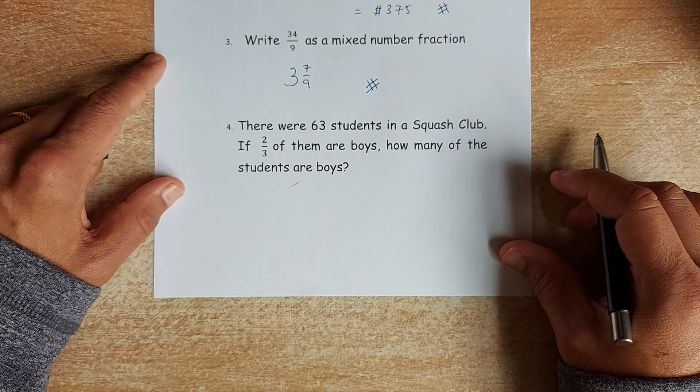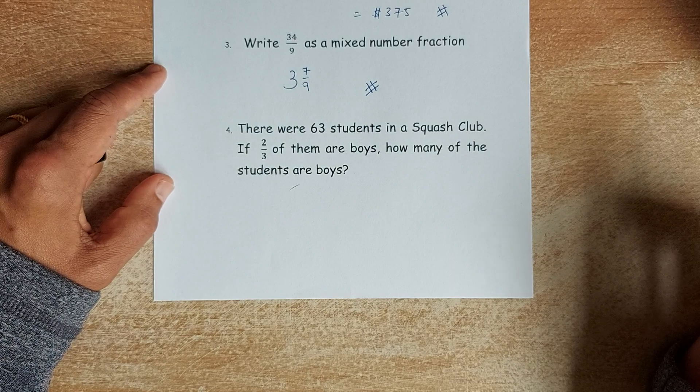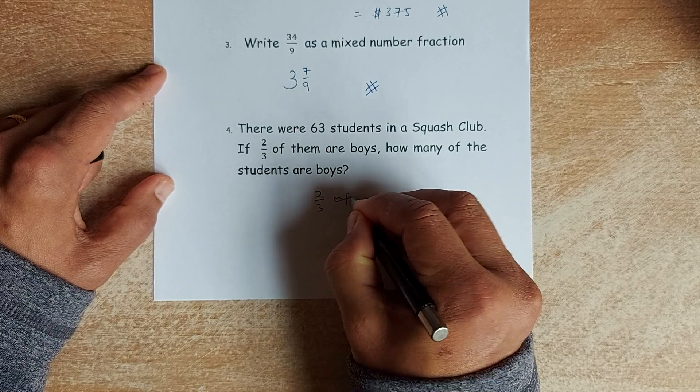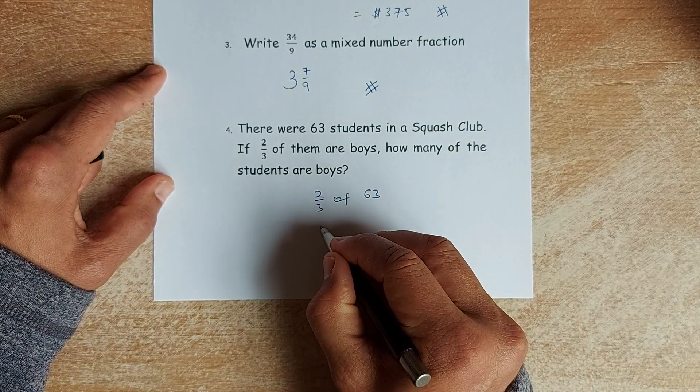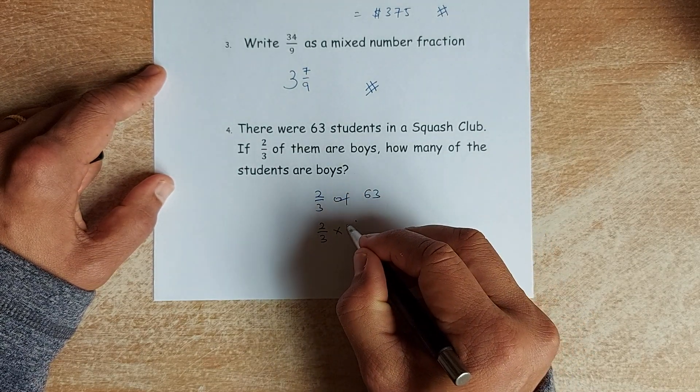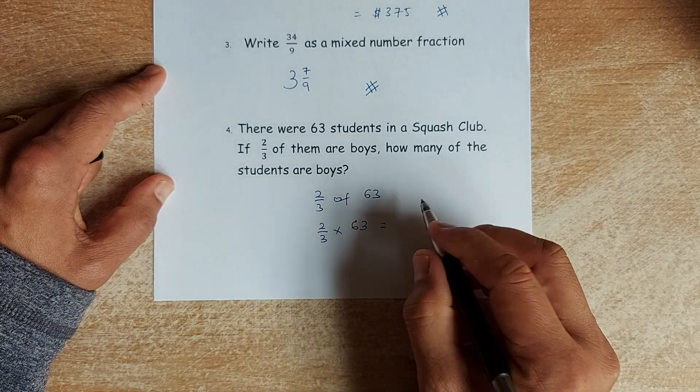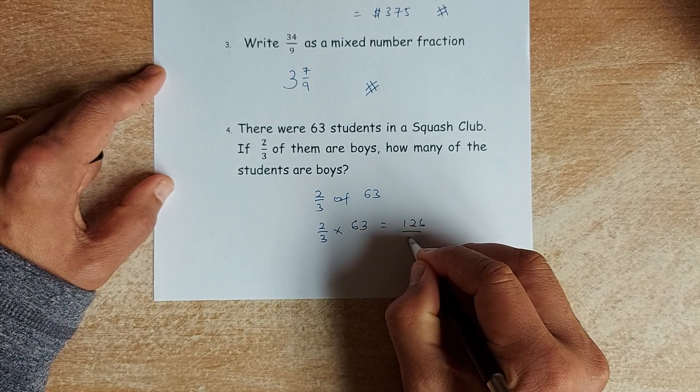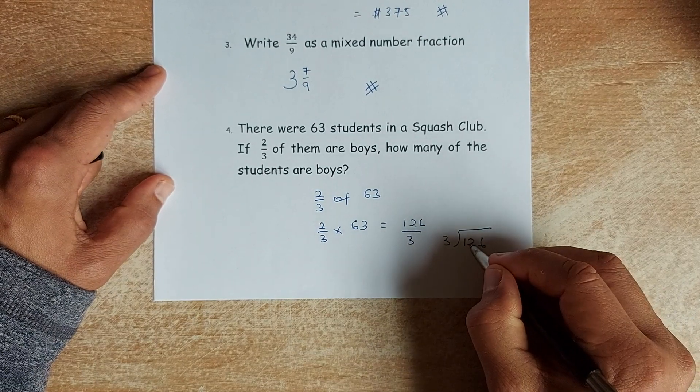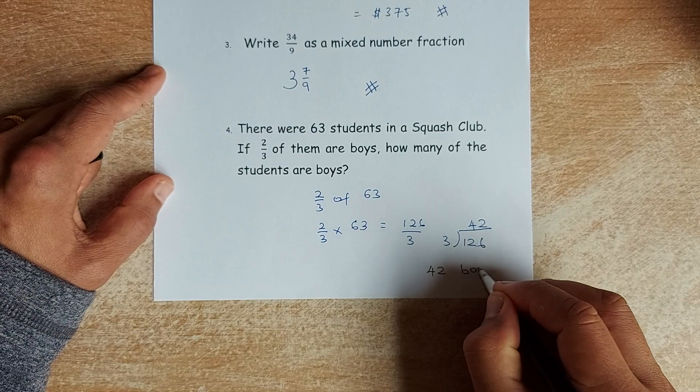Question 4 is, if there were 63 students at squash club, if two-thirds of them are boys, how many of them are boys? So two-thirds of 63 students are boys. So in other words, in mathematics, of means you multiply 2/3 times 63. So what you do, you're going to multiply 2 times 63 is 126 divided by 3. Use your short division, 126 divided by 3. 12 is to 3 is 4. 6 is to 3 is 2. So there are all together 42 boys.